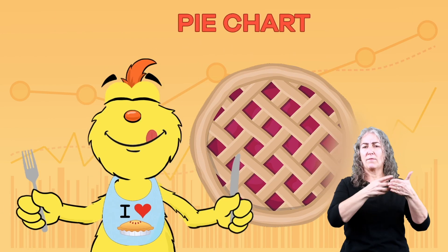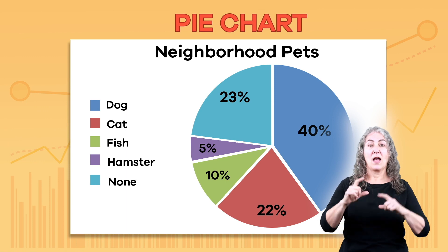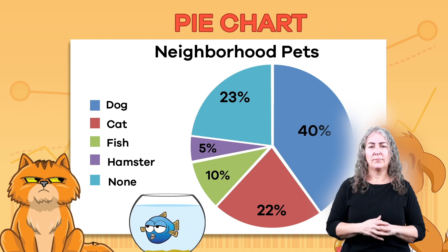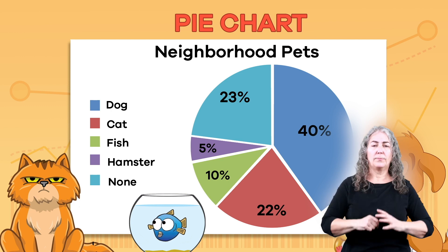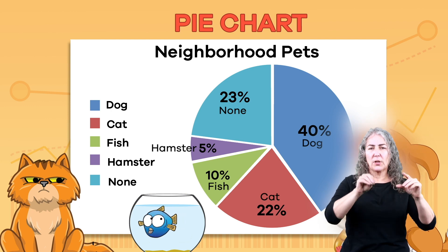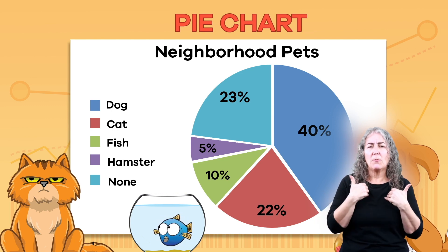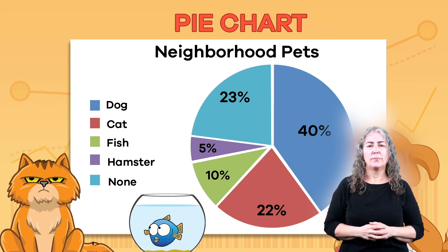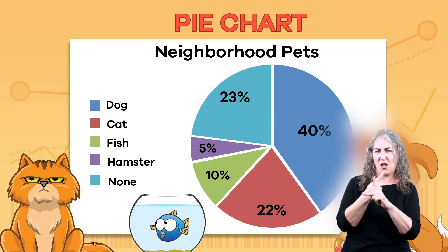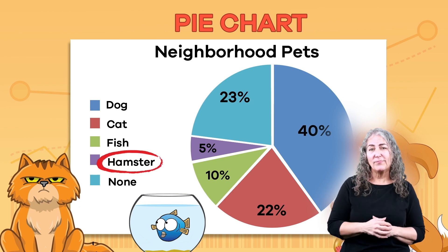The last type of graph we are going to look at is called a pie chart. Some graphs are also called charts. A pie chart is exactly what it sounds like — a graph in the shape of a pie or a circle. The pie chart is cut to show the number of pets in the neighborhood. See if you can figure out which animal is the most popular pet. Did you say dogs? Well done! Now see if you can figure out which pet is the least popular. I bet you said hamster! You're getting the hang of this!